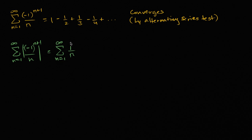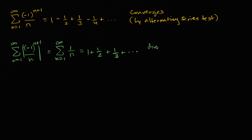There's a video on Khan Academy — you should look it up — on the famous proof that the harmonic series diverges. The harmonic series is one plus one-half plus one-third, and this thing right over here diverges.